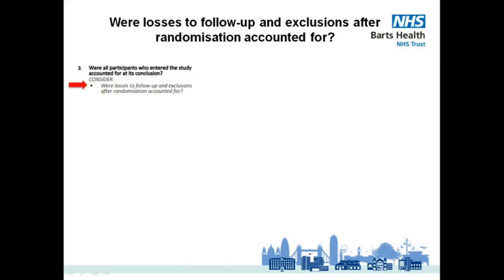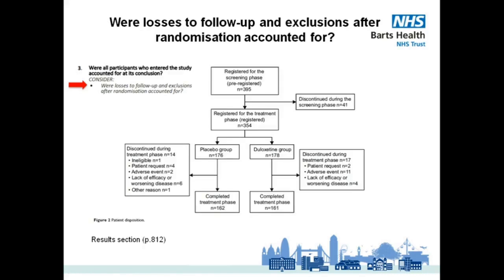We're first asked to look at whether losses to follow-up and exclusions after randomisation were accounted for. The answer is usually presented as a flowchart in the results section. As you can see, the number of participants are clearly shown in each group they were randomly allocated to, from start to finish, alongside the reasons why some of them withdrew.